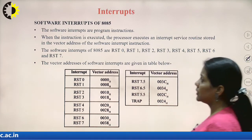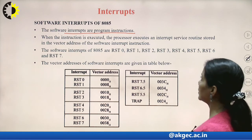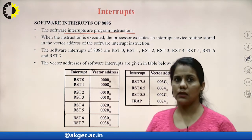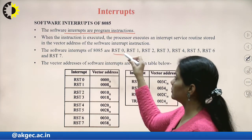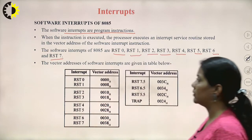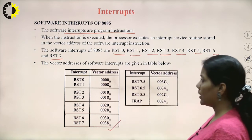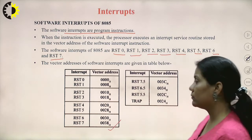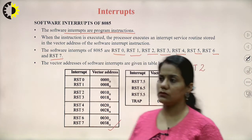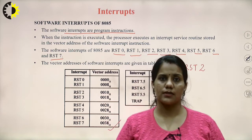Software interrupts are program instructions. When the instruction is executed, the processor executes an interrupt service routine stored in the vector address of the software interrupt instruction. The software interrupts of 8085 are RST0, RST1, RST2, RST3, RST4, RST5, RST6, and RST7. The vector addresses of these software interrupts are given in the table. As an example, taking RST2: we need to find out to which memory location the program execution control will go whenever this RST2 instruction is encountered.